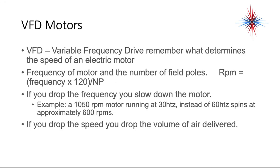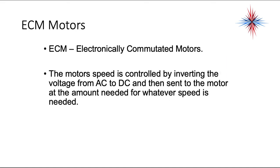A VFD is a variable frequency drive. Remember what determines the speed of an electric motor: it's the frequency and the number of poles. The formula is: RPM = frequency × 120 divided by the number of poles. If you drop the frequency, you can slow down the motor. For example, a 1050 RPM motor running at 30 hertz instead of 60 hertz spins at approximately 600 RPM. If you drop the speed, you drop the volume of air delivered.